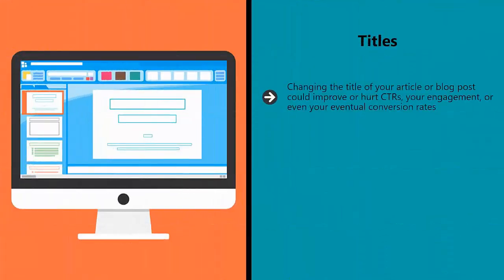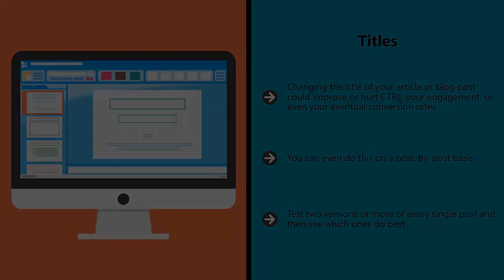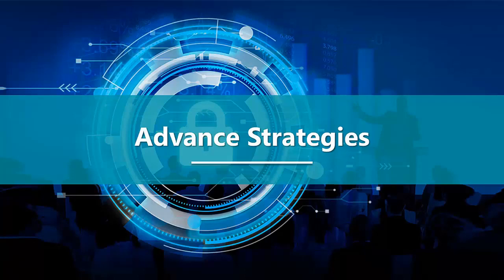Titles. Changing the title of your article or blog post could improve or hurt CTRs, your engagement, or even your eventual conversion rates. You can even do this on a post-by-post basis — test two versions or more of every single post and then see which ones do best. Use the title that outperforms the others.